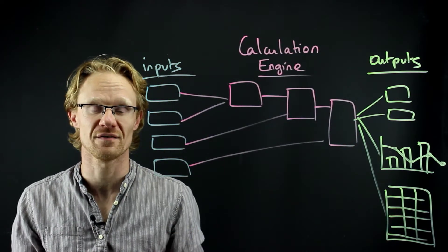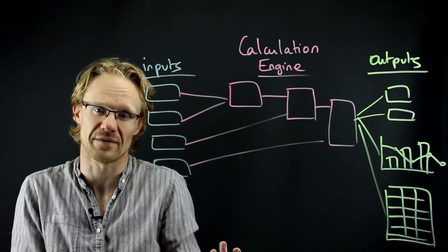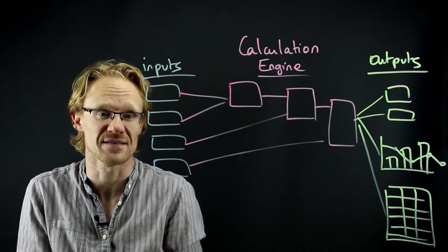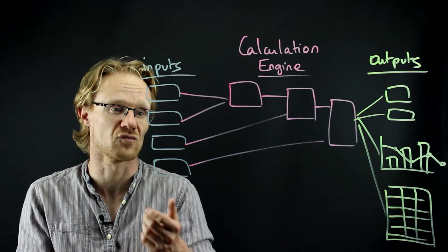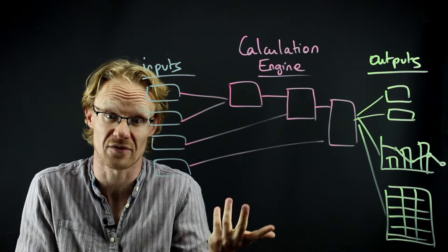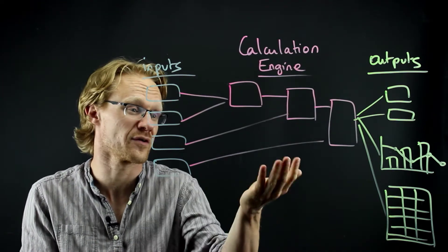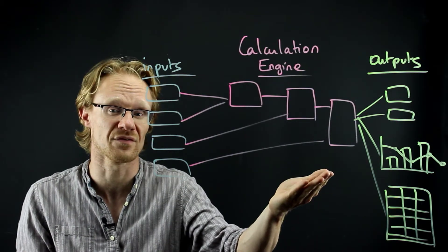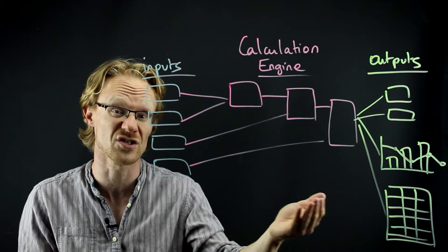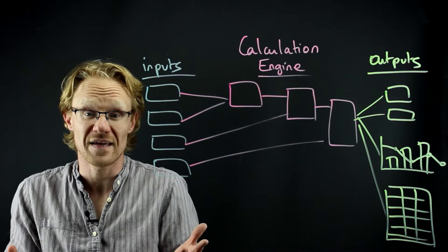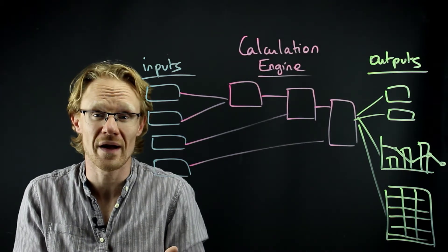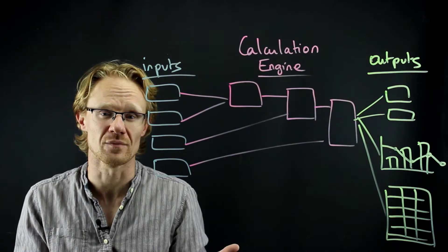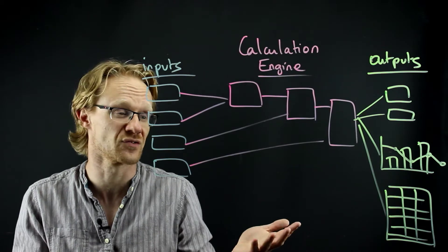So now the question is, how might we go about developing this? The naive answer might be, well, we have to develop all the inputs first, because without the inputs we can't start implementing the calculation functions, and without the calculation functions we have no outputs, and therefore we can't implement any of the widgets for the front-end. And the thing is, this would work, however it's really risky. Why?